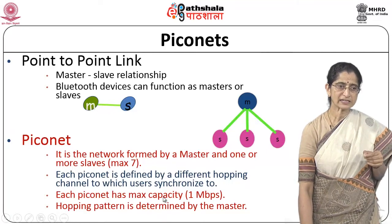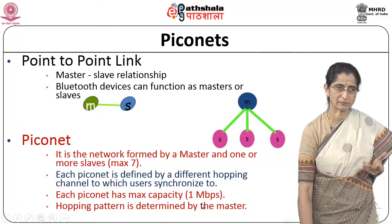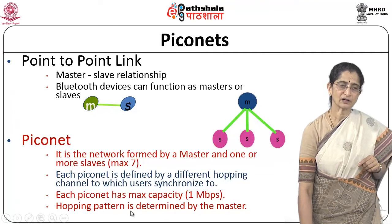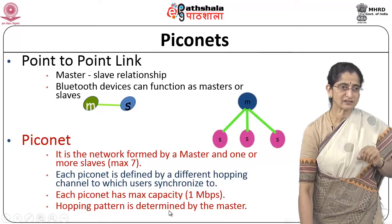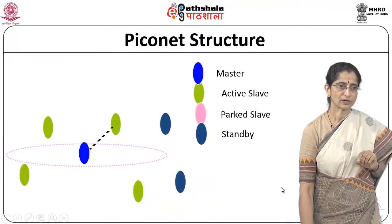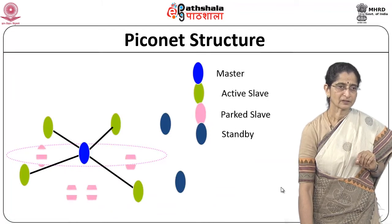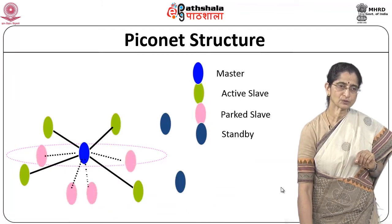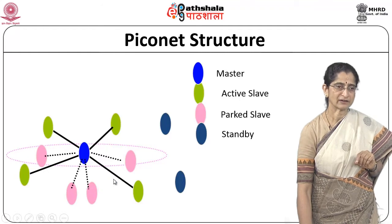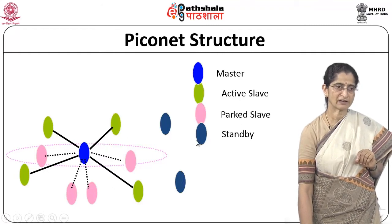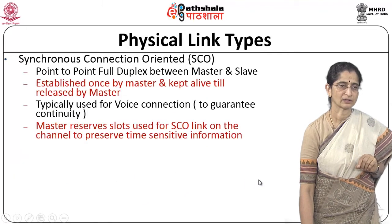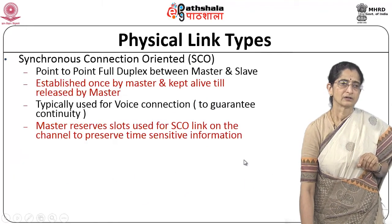Each Piconet has a maximum capacity of about 1 megabit per second, though slightly higher data rates are now supported. The hopping pattern is determined by the master. Within a Piconet, you can have a master, active slaves, parked slaves, and slaves in standby mode.